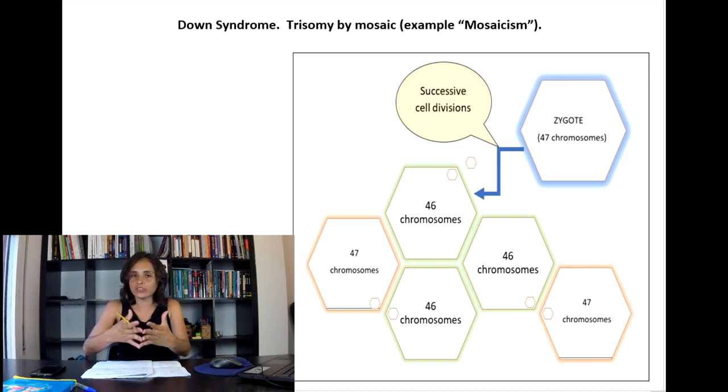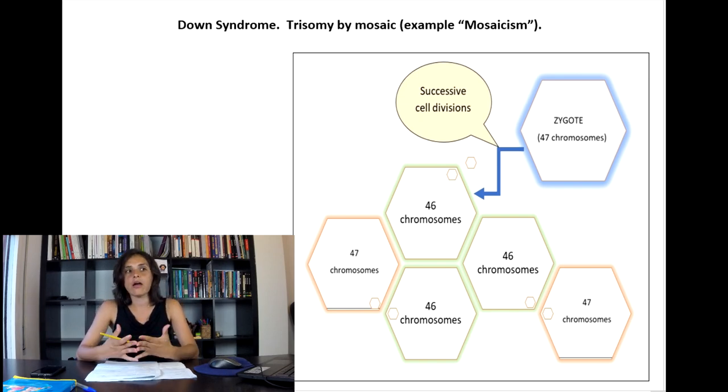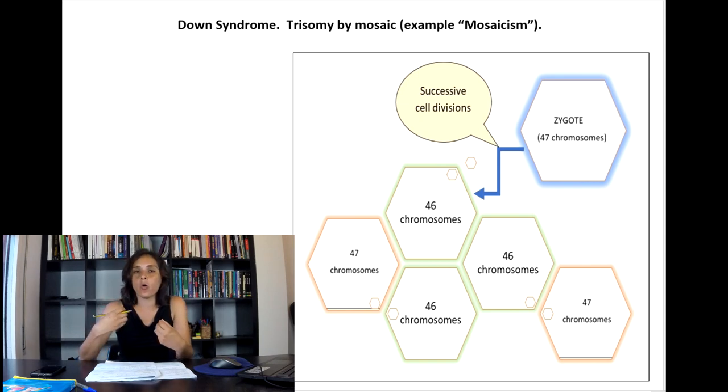That is the reason why this kind of trisomy is called mosaic. The symptoms that can be originated by mosaic system can be very variable. Since the phenotype, that is the expression of the genes, will depend on how many and which organs are affected by the trisomy.